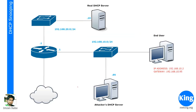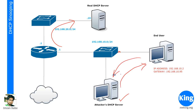But let's assume there is a rogue attacker in the network who has installed a DHCP server on their computer. When an end user sends a broadcast message, the relay agent would forward it to the real DHCP server. However, the rogue DHCP server already in the network also listens to that broadcast and sends an offer. The DORA process — Discover, Offer, Request, Acknowledgement — would happen here, and this end user device would get an IP address from the attacker.